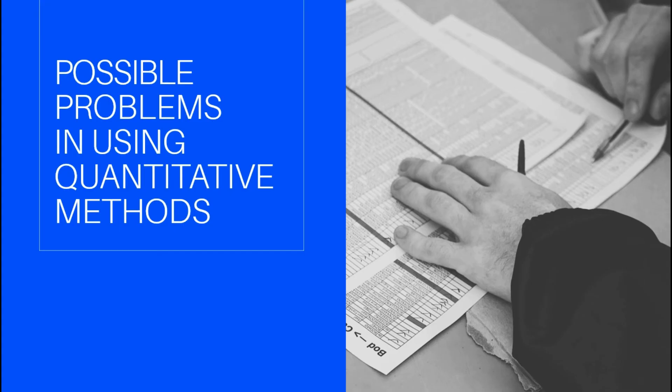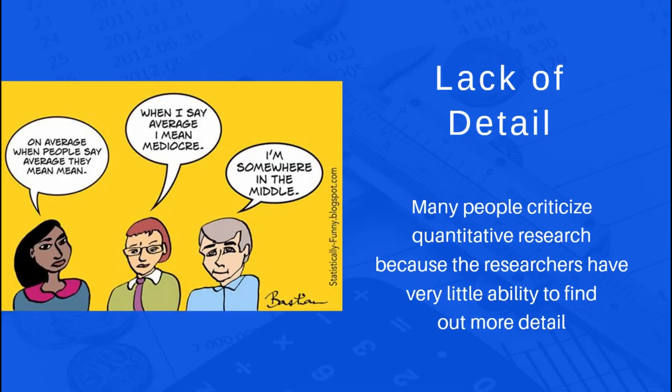Aside from presenting the strength of using quantitative methods, we also have possible problems in using quantitative methods. Number one is lack of detail. Many people criticize quantitative research because the researchers have very little ability to find out more detail. For example, many quantitative research methods use questionnaires as a means of finding out percentages of the population that possess certain characteristics or think certain things.